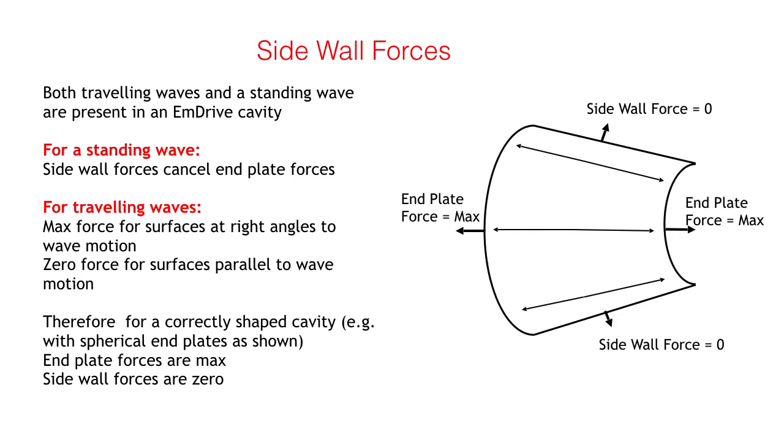However, for a traveling wave, the maximum force is achieved when the wave front is reflected at right angles to the end plate. In a well-designed cavity, the traveling waves are moving parallel to the cavity wall at the wall surface, and the force is therefore zero. So the thrust is due only to the end plate forces.